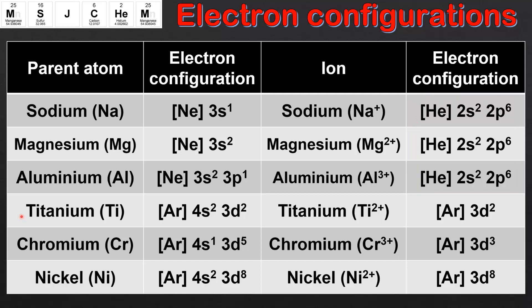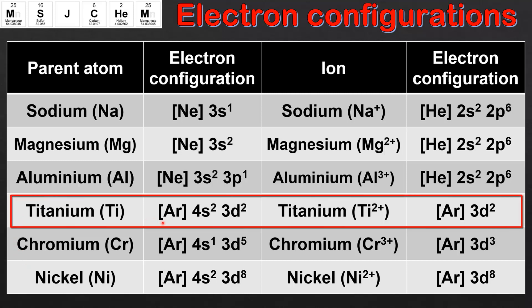The next three examples are the transition elements Titanium, Chromium and Nickel. Titanium has the electron configuration AR4s2 3d2, which can also be written as AR3d2 4s2. When titanium forms a 2+ ion it loses the two electrons in the 4s sublevel first. This is true of all transition elements. So the electron configuration of the Titanium 2+ ion is AR3d2.